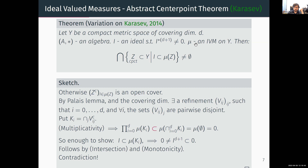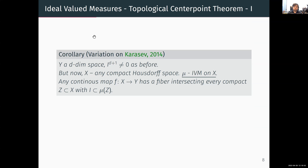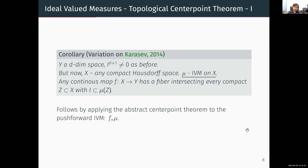This theorem talks about some point, but we want something about fibers. Using the push-forward construction, the corollary is: given a d-dimensional space Y with an ideal as before, and any compact Hausdorff space X with an IVM on X, then for any continuous map from X to Y, we have a fiber which intersects every compact set in X with i in its measure. The idea is to apply the abstract center point theorem to the push-forward measure.